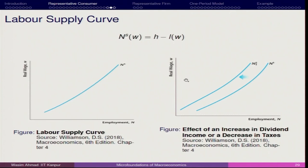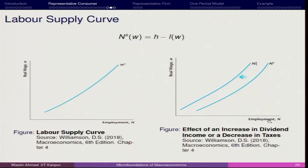In terms of comparative statics, what causes the labor supply curve to shift leftward? There should not be a sudden increase in income of the representative consumer, and there should not be a tax decline. If the government says you will not be charged tax, that extra money the consumer has will also have an interfering effect on the labor supply. An increase in profit, dividend, or decrease in taxes causes a leftward shift.